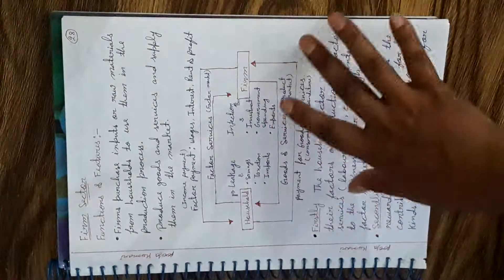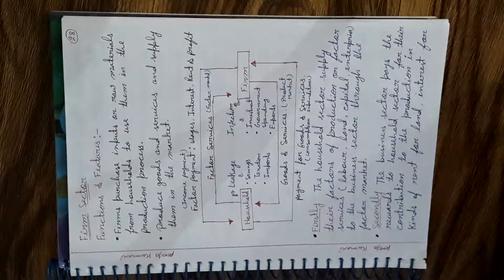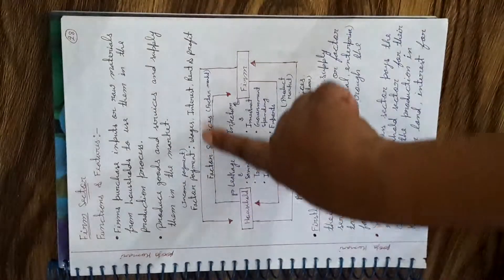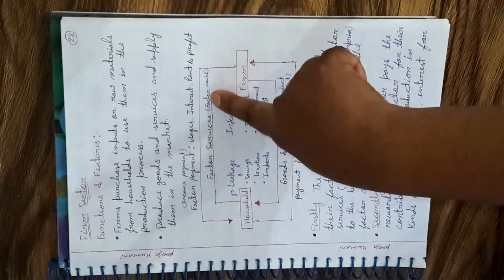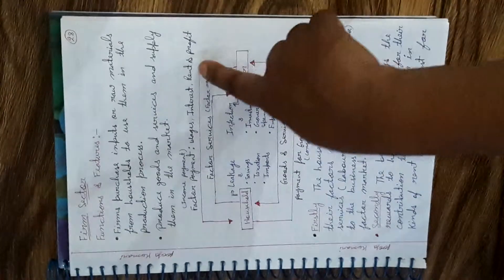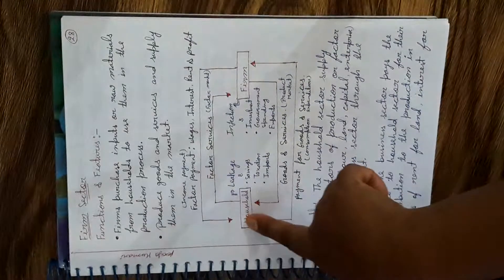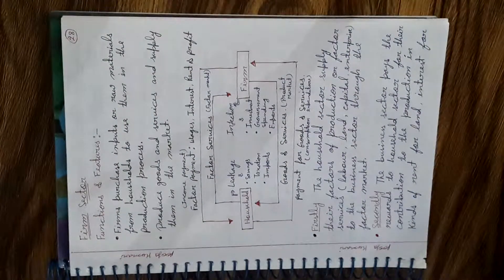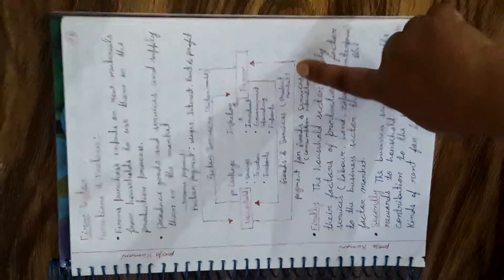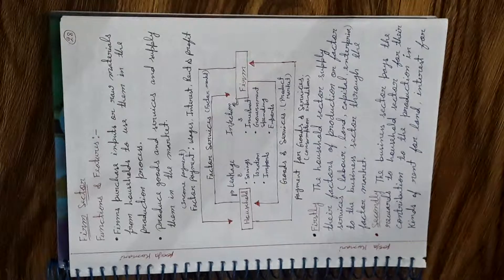Now this diagram you have already studied in my classes in this series. I have used it 2 to 3 times. In the two-sector model — household and firms — households provide factor services through the factor market to firms. Firms make factor payments as wages, interest, rent, and profit. When households have income, they purchase goods and services from firms through the product market, which is called consumption expenditure. You will also see two things here: leakage and injection. You must include this if you are writing about two-sector economy.